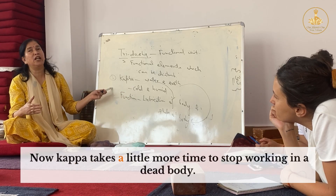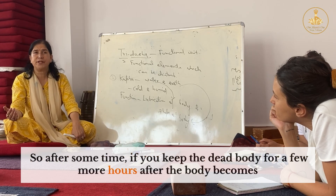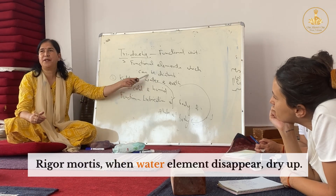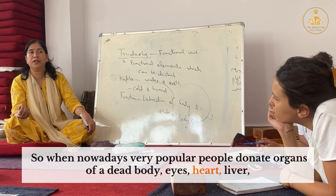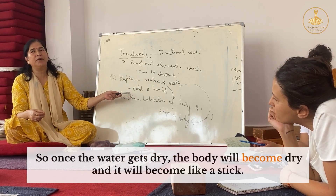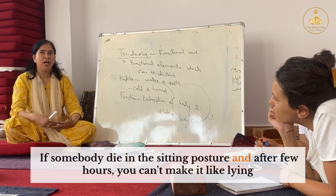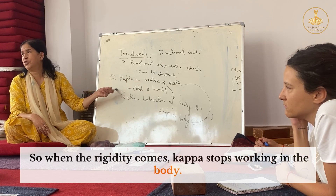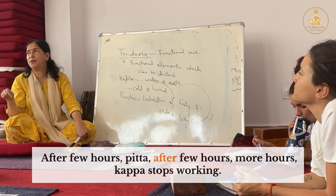Kapha takes a little more time to stop working in a dead body. After a few hours, if you keep the dead body, the body becomes rigid like a stick — this is rigor mortis. Rigor mortis happens when the water element disappears and dries up. When people donate organs — eyes, heart, liver, kidney — you can donate them while the Kapha energy is still working, while there is still water. Once the water dries, the body becomes rigid. That's why we immediately straighten the body after death. If someone dies in a sitting posture and a few hours pass, you cannot move them to a lying position. So rigor mortis is a Kapha phenomenon. Vata stops the moment the person stops breathing. After a few hours, Pitta stops. After more hours, Kapha stops working.